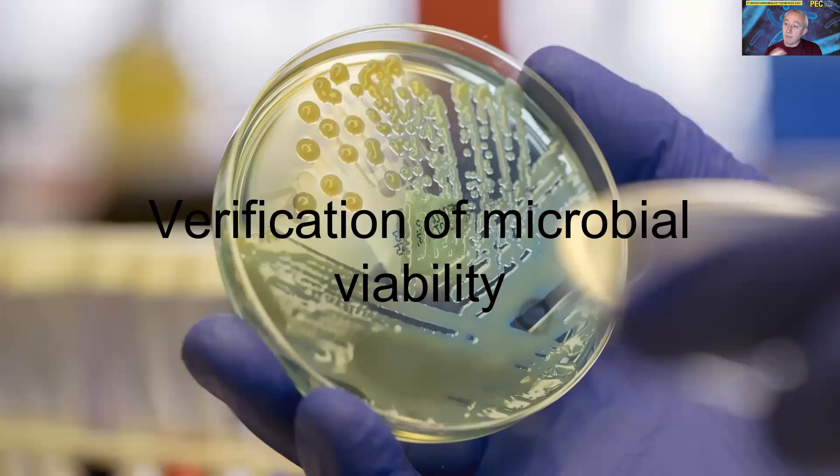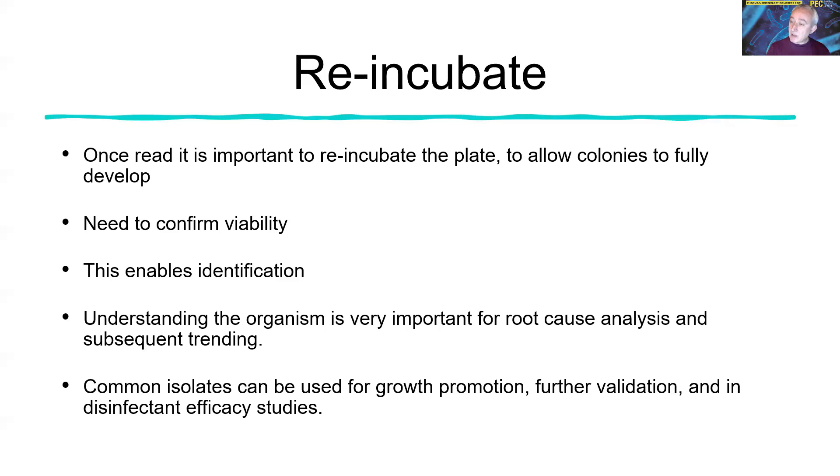Another advantage with something like the quantum being a culture-based method is that we can also take off colonies and subject those to microbiological identification. Because we're reading microcolonies to start with, we would need to reincubate the plates and confirm we've still got viability after the dye has been added. Then we can take those organisms and take them through to microbial identification because understanding what the organisms are is important for trending, when you see the same organisms, if we've got a particular issue of concern like a biofilm. And also to work out the origins. Is it likely to be really from the water system or is it cross-contamination from an analyst?